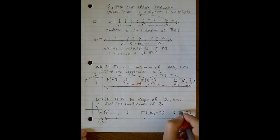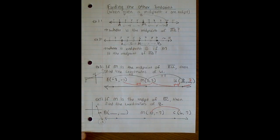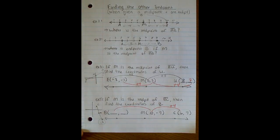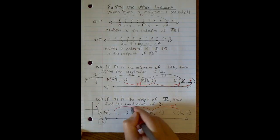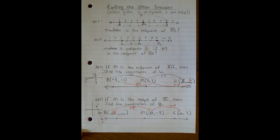So from 6 to 10, I'm adding 4. So I'm going to do the same thing from my midpoint to my endpoint that's missing. So 10 plus 4 gives me 14.